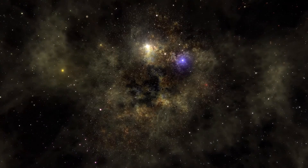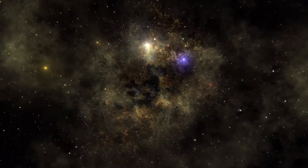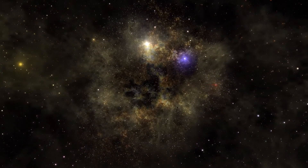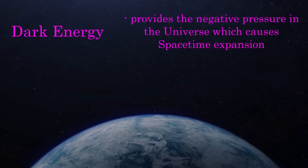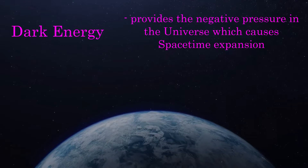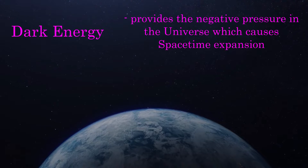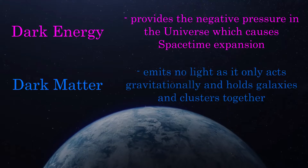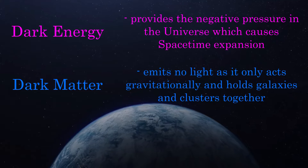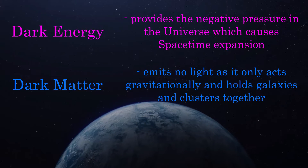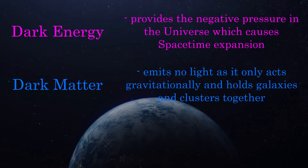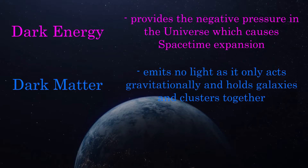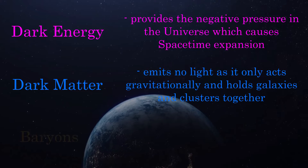Let's begin by considering the makeup of the universe. It's made up of three prominent components at present. These being dark energy, a mysterious form of energy which acts to expand spacetime itself and move galaxies away from each other over a universal distance. There's also dark matter, which is matter that only acts gravitationally and does not emit any electromagnetic waves, hence the name dark. It's thought dark matter clustered into spherical halos in the early universe which formed the seeds and gravitational wells for galaxies to synthesize in where we see them today. And finally, there's baryons.